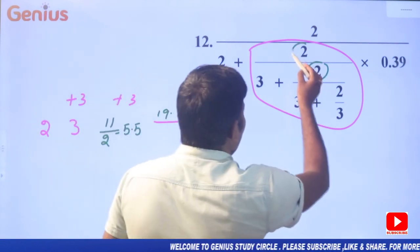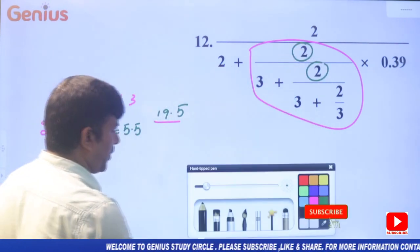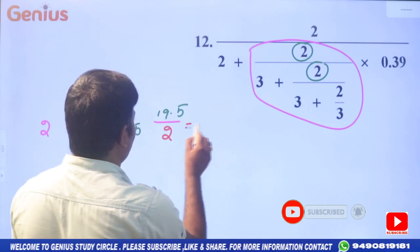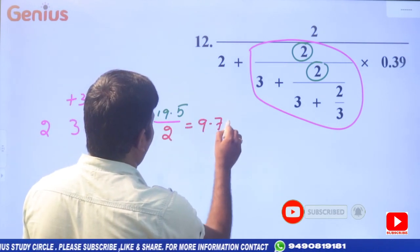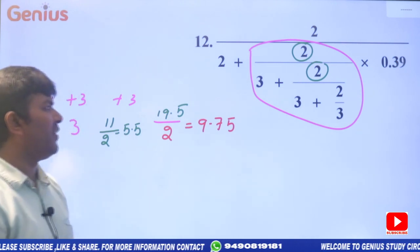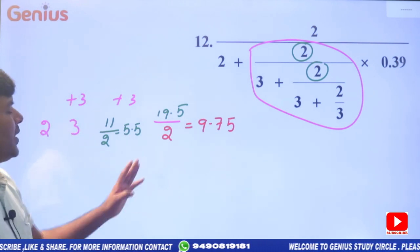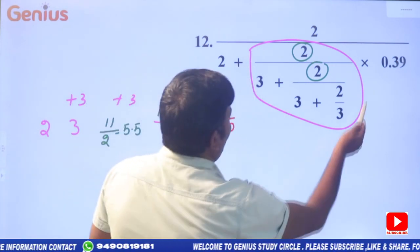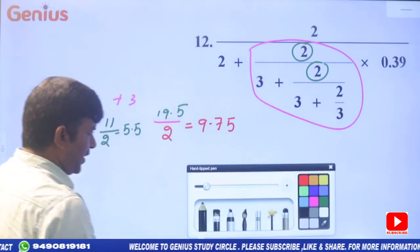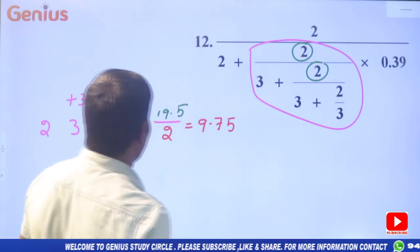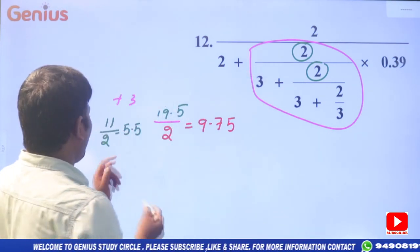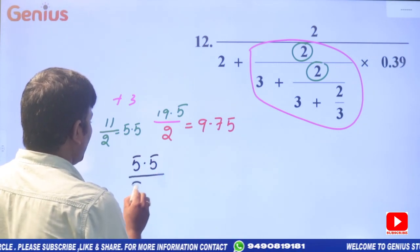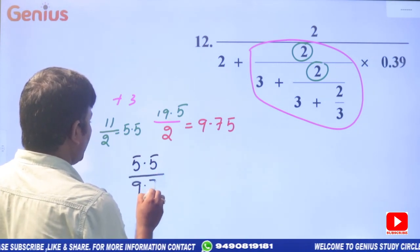We have to divide again: 19.5 divided by 2, that is equal to 9.75. So the result is 9.75.